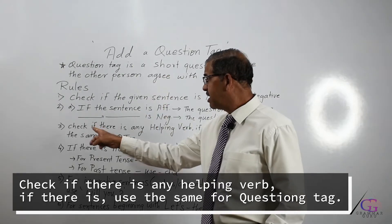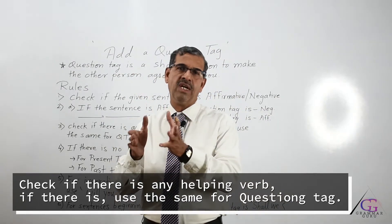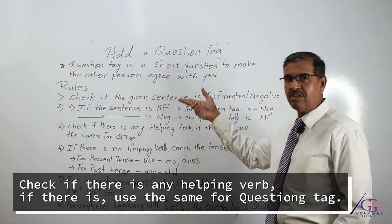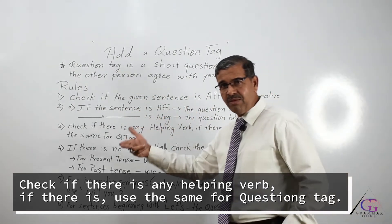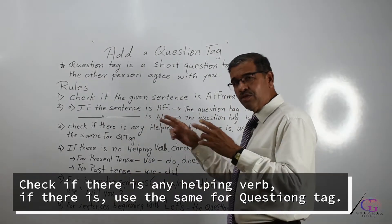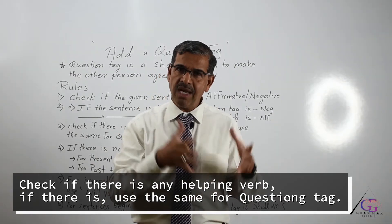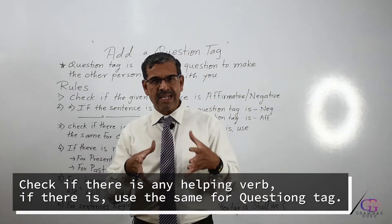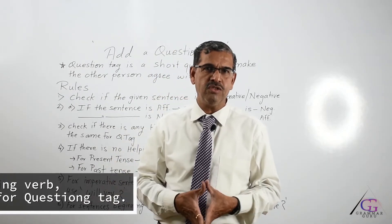Whether you use the helping verb with 'not' or without depends entirely on Rules 1 and 2. For example, if the sentence has 'have' as a helping verb and the sentence is affirmative, the question tag will be 'haven't.' If the sentence is negative, only 'have' will be used. Learning all rules step by step means no mistakes in your answer.